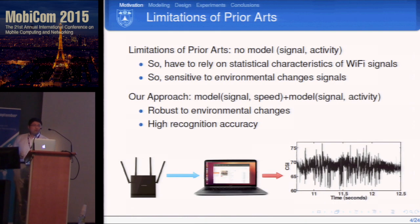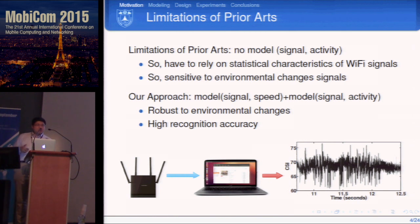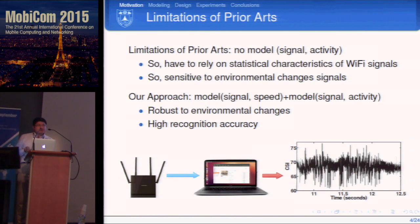In our approach, we propose a model-based method. We build models from human activity speed to Wi-Fi signal changes, and from signal changes back to human activities. Our model is very robust to environment change. Also, Wi-Fi signals from commercial devices are very noisy, and we need models to discover activity patterns — otherwise the patterns discovered may be related to the environment, not to human activities.